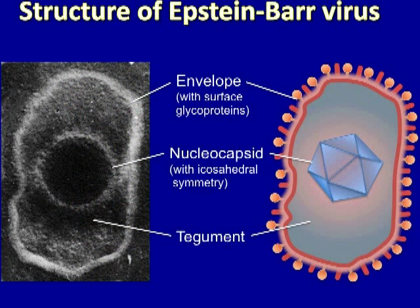Much of what has been said about viral structure can be summarized in this slide, which depicts the structure of Epstein-Barr virus with an electron micrograph on the left and a schematic diagram on the right. Like most herpes viruses, Epstein-Barr virus is surrounded by an envelope studded with surface glycoproteins, which are not immediately apparent in the electron micrograph because of their small size and poor resolution. Also poorly resolved is the nucleocapsid, which has icosahedral symmetry that would become apparent if the envelope were removed with a solvent.